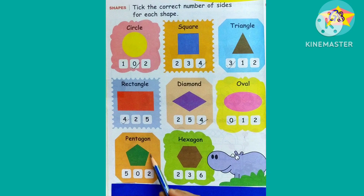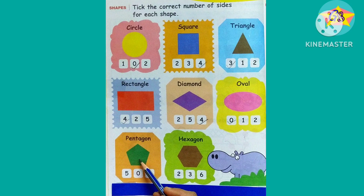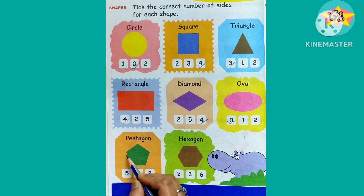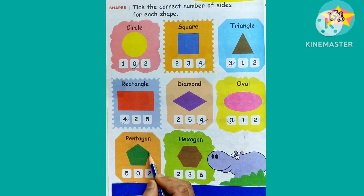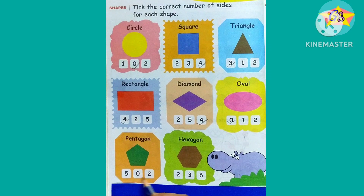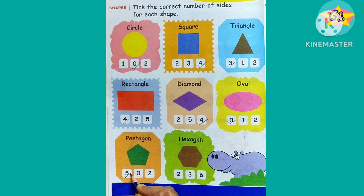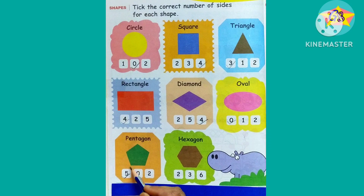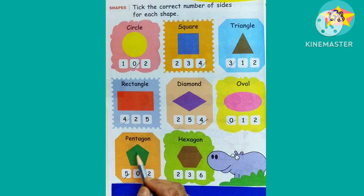The next shape is a pentagon. Let's count the sides: one, two, three, four, five — there are five sides. So we should tick on number five. In Hindi, pentagon is called 'punch kord' because 'punch' means five, so it has five sides and five corners.